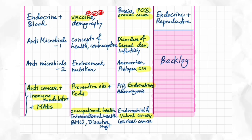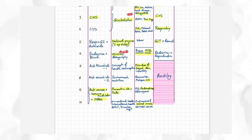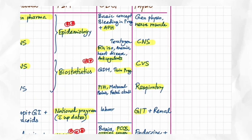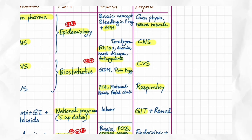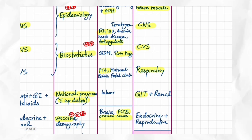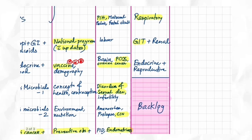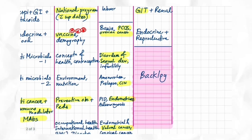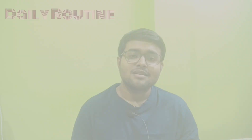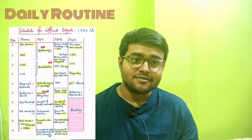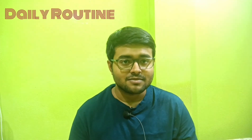In Physio, almost all topics are important, but give more importance to normal muscle physiology, CNS, CVS, respiratory, and GIT. In four days you should clear the backlog. Pause the video, take a screenshot, and adjust the schedule for yourself.